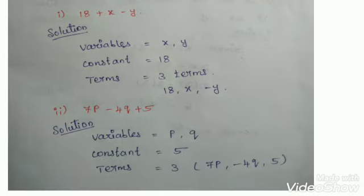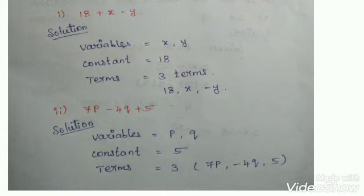Next, second question: 7P minus 4Q plus 5. What are the variables here? P and Q. So variable is P and Q. What is the constant? The single number is 5. So constant is 5. How many terms are there? Three terms: 7P, minus 4Q, and 5.